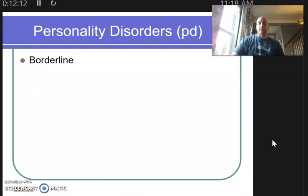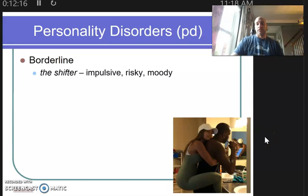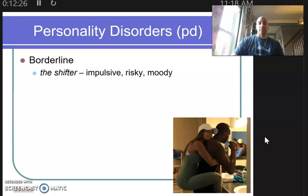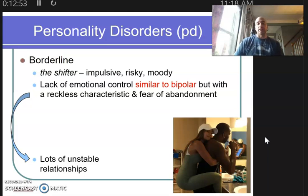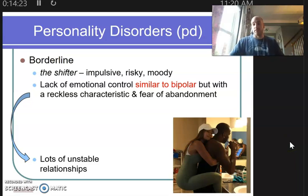Another one that sounds a lot like a mood disorder is someone diagnosed borderline. Borderline personalities are nicknamed shifters — they can be very moody, shifting from high to low moods, and in the middle of all that, they're high risk-takers with impulsive behaviors. This sounds a lot like bipolar and can even be misdiagnosed. Someone who's borderline lacks emotional control like someone who's bipolar, but they also have this reckless characteristic and a tremendous fear of abandonment. Once they create a relationship, they fear it might go away, leading to lots of unstable relationships.